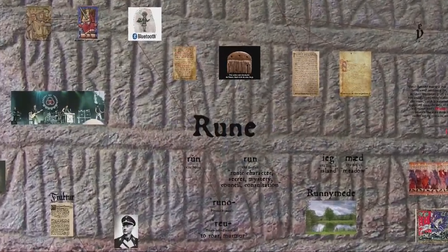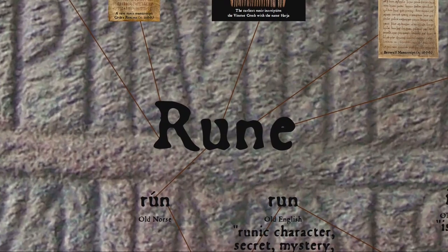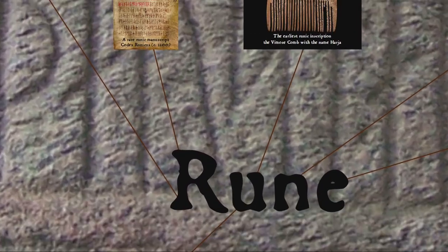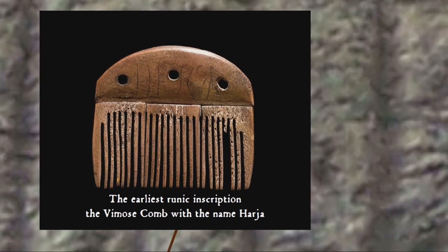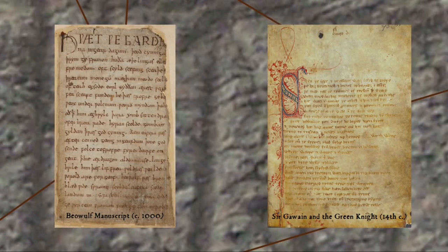The runic system that was used in Anglo-Saxon England and Scandinavia before the arrival of Christian missionaries was rarely employed for writing extended texts — mainly just inscriptions and such like. Once the missionaries arrived, though, it didn't take long for the new converts to come up with the idea of using the Latin alphabet for writing down not just Latin but also their own language.